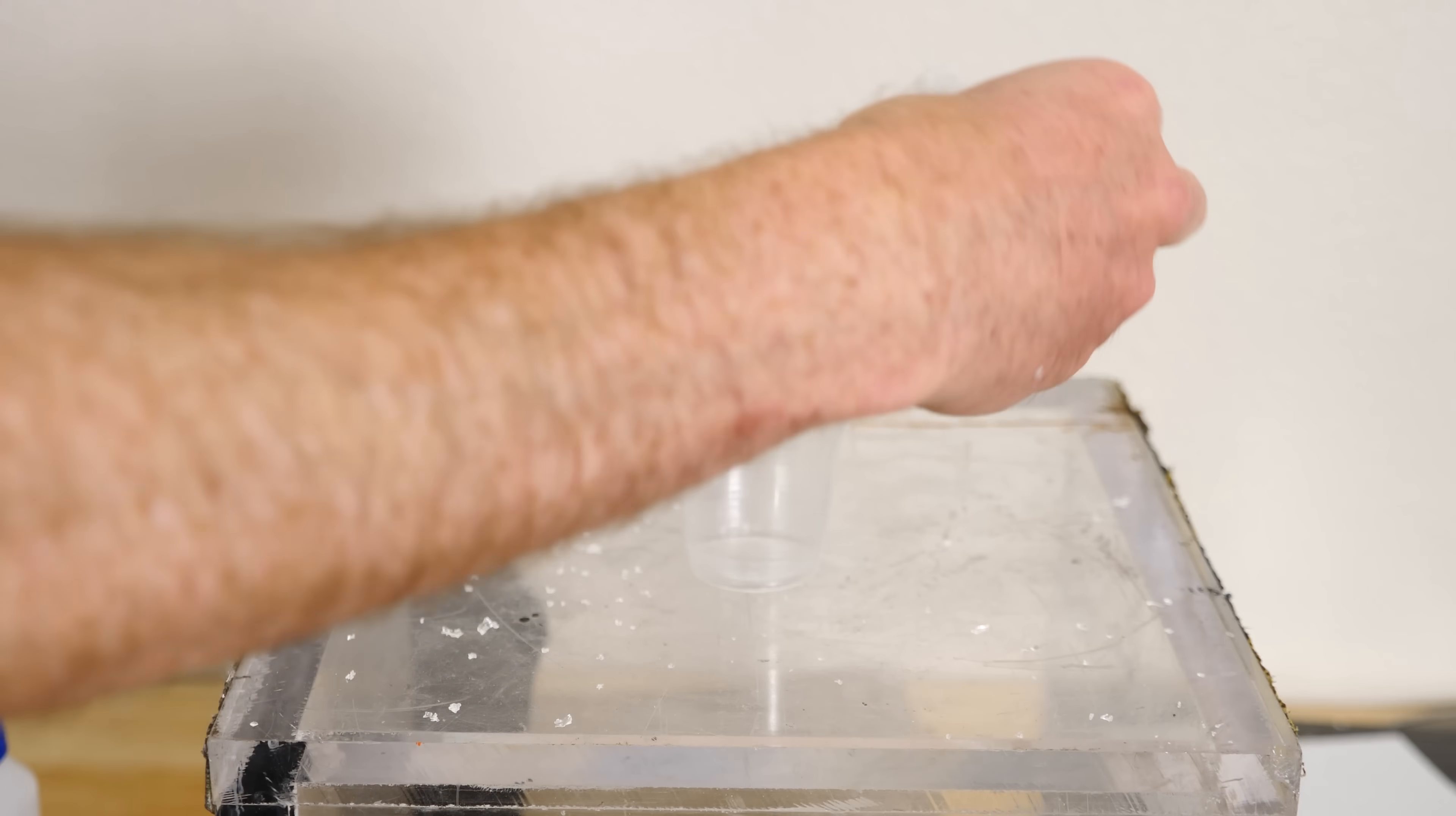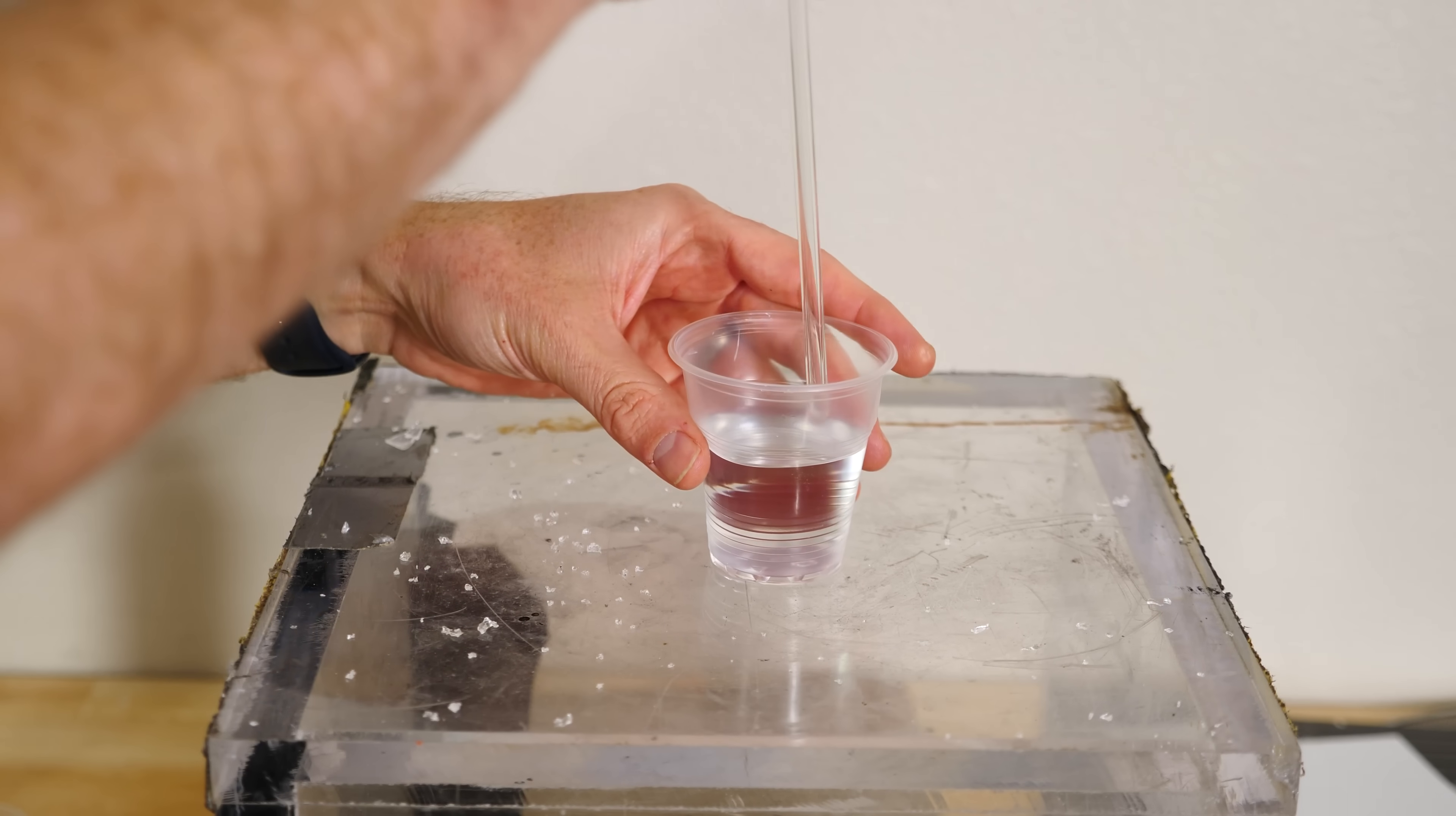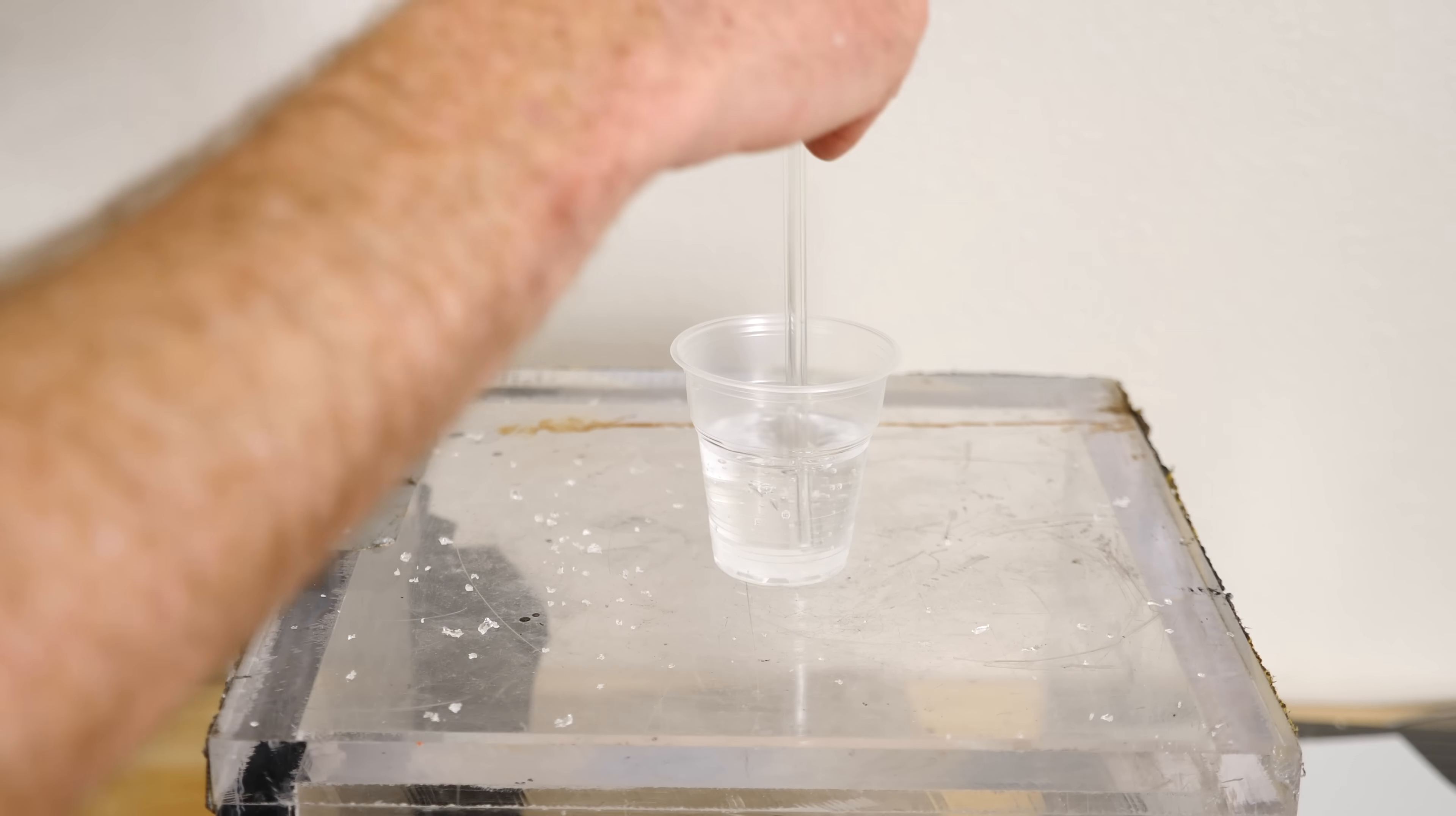So this is just going to start the polymerization process. You mix this around a 12 to 1 ratio. Then once you mix those two together, just mix it up and it's going to start to polymerize pretty quickly within about a half hour now.